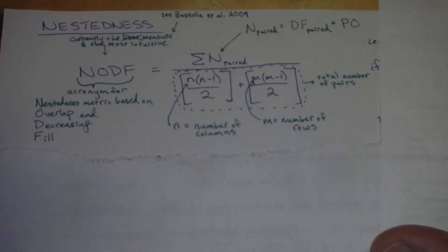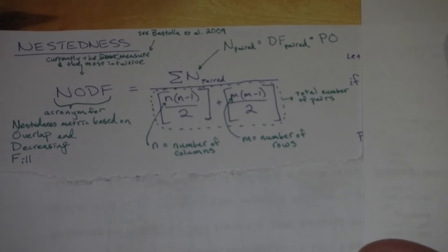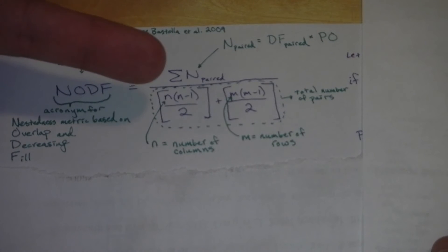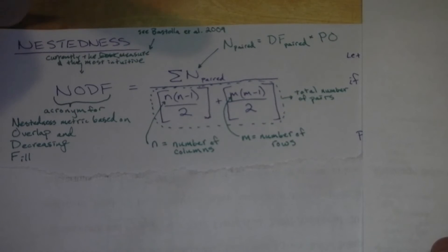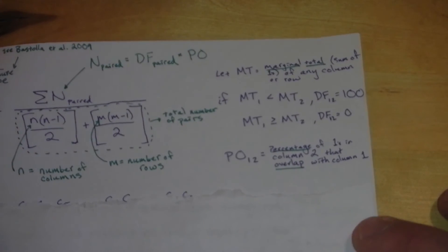So for measuring nestedness, this is how you would measure NODF. It sums over this value of N paired, which I'm going to go over in a second, and that's divided by the number of columns in the network times the number of columns minus one divided by two, plus the number of rows times the number of rows minus one divided by two. So that essentially gives you the total number of pairs in the network. This summed value of N paired is equal to the decreasing fill of paired columns as well as the percentage overlap.